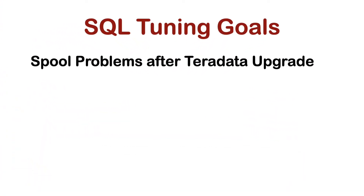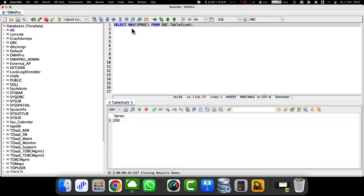After a Teradata upgrade, it can happen that queries that worked before without problems suddenly get spool problems. This occurs because the number of amps is higher than before after the upgrade, but the disk space is not scaled proportionally. There is less disk space available for each amp. The following query can check the number of amps.